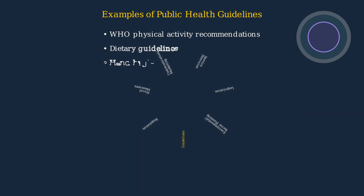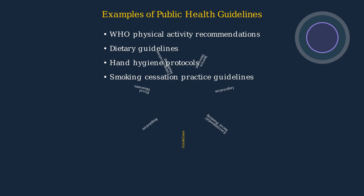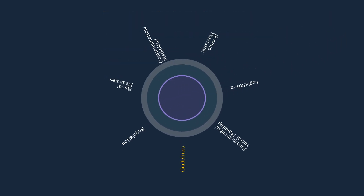In public health, guidelines are widely used to promote healthy behaviors. Examples include World Health Organization physical activity recommendations, dietary guidelines, hand hygiene protocols, and smoking cessation practice guidelines. Guidelines are a powerful policy tool that can support multiple intervention functions of the behavior change wheel, including education, training, and enablement. By creating clear, evidence-based guidelines, policymakers can support individuals and organizations in making positive behavior changes.